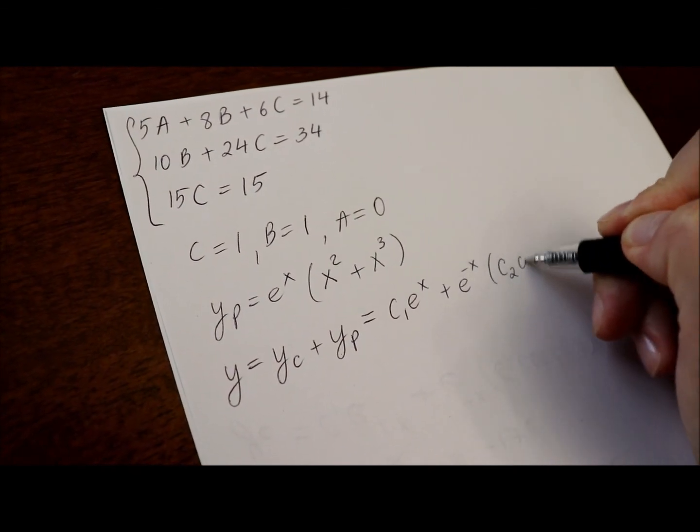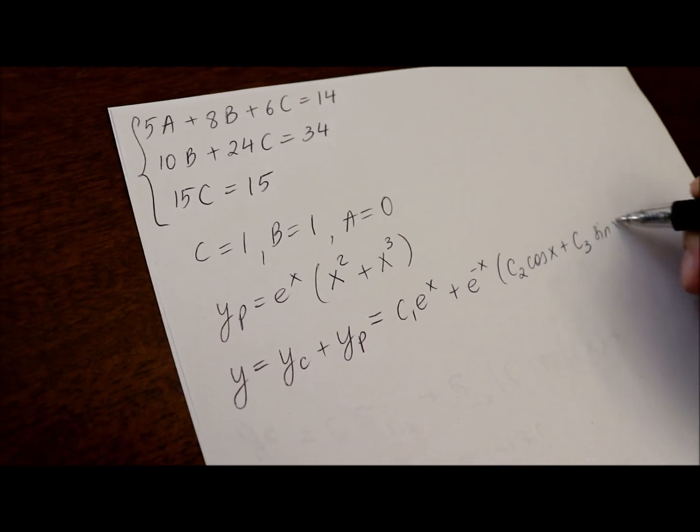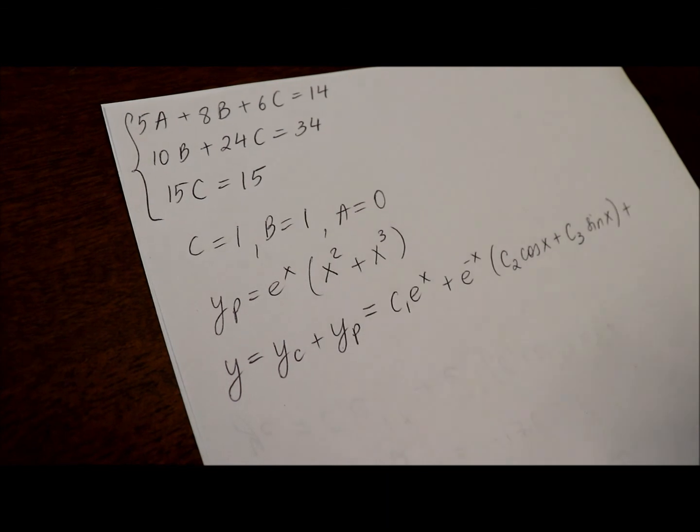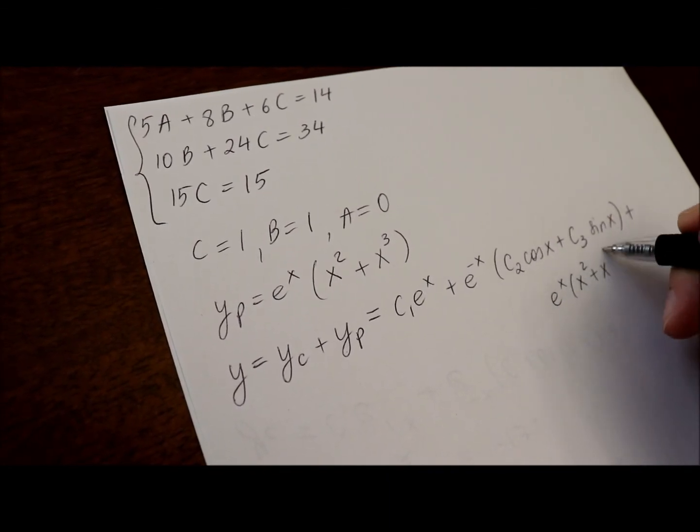c sub 2 cosine x plus c sub 3 sine x plus the particular solution e to the x times x squared plus x cubed.